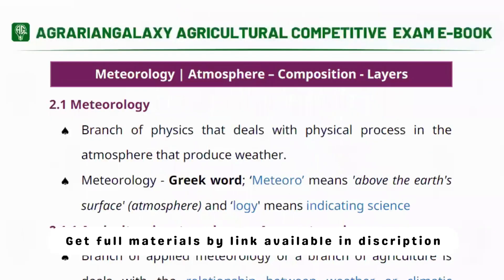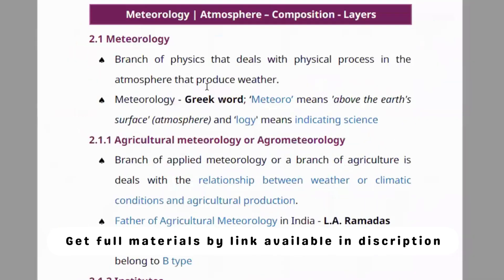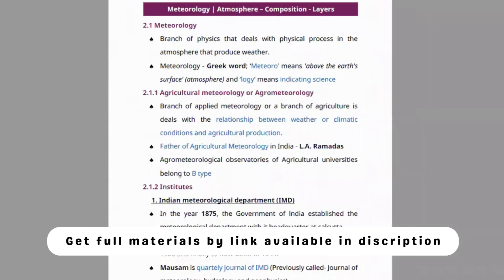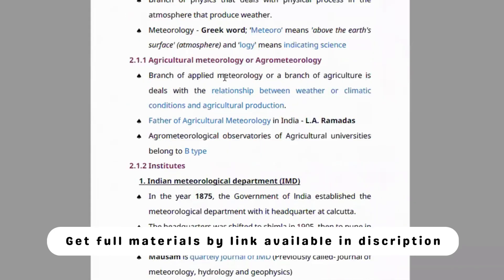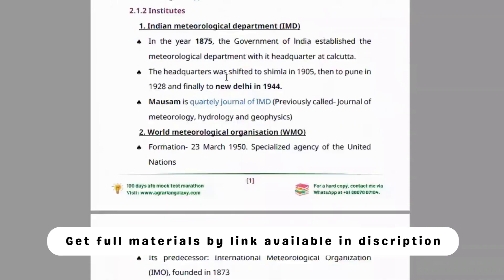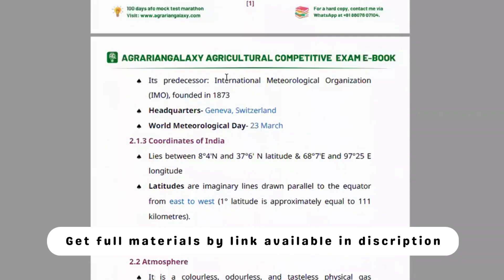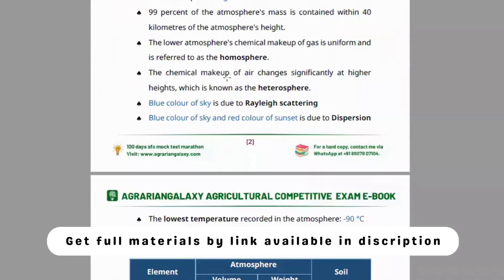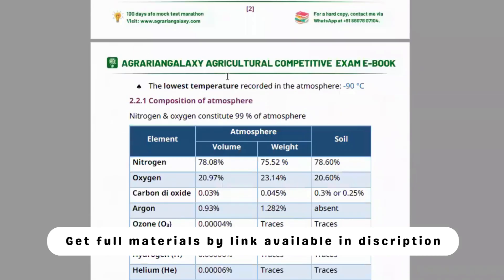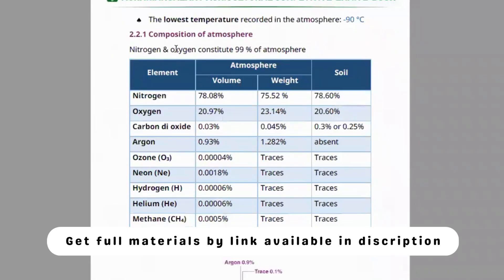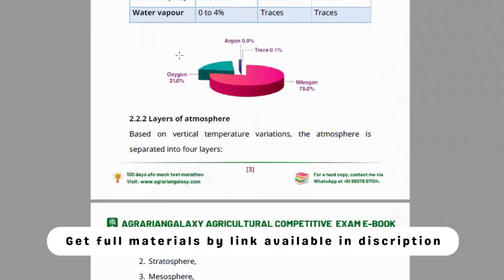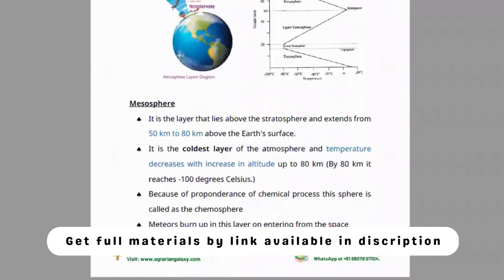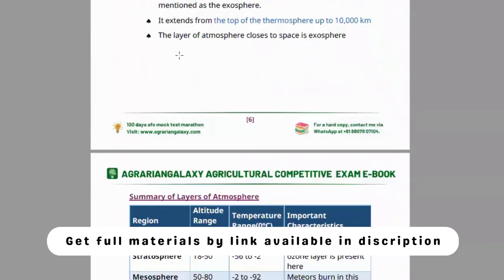Moving to module two, it is all about meteorology — the atmosphere and its layers. It contains definitions of meteorology, what are the institutes in meteorology, its origin, coordinates of India, and everything about the atmosphere, clearly explained in tables including the composition and layers of the atmosphere.